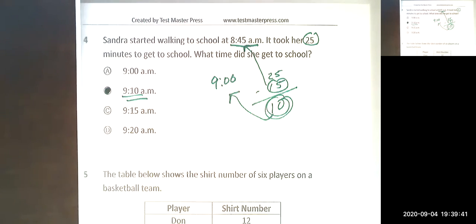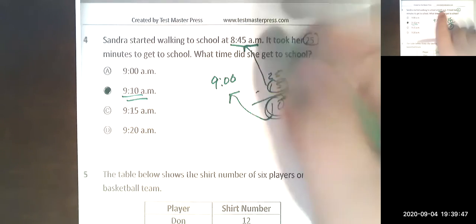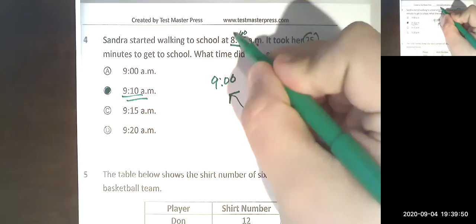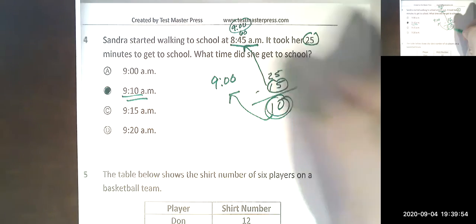That would leave me with 9:10 AM, so I believe the answer is 9:10 AM. Because remember when you get to 59, 60 minutes is when this actually goes to nine o'clock, so that is 15 minutes away. So 15 away from the 25 it took her, she'd get there at 9:10.